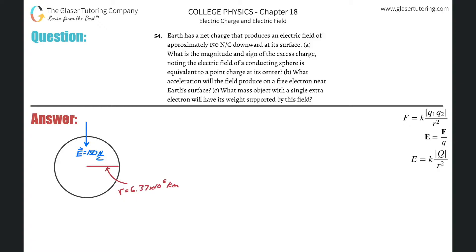Number 54. Earth has a net charge that produces an electric field of approximately 150 newtons per coulomb downward at its surface, letter A. What is the magnitude and sign of the excess charge, noting the electric field of a conducting sphere is equivalent to a point charge at its center?